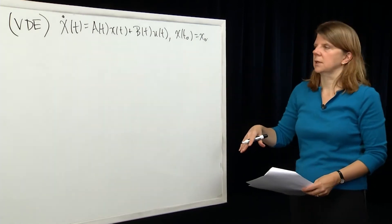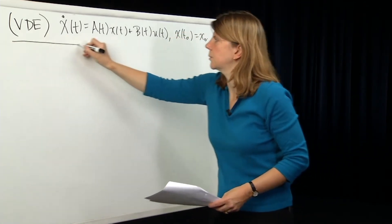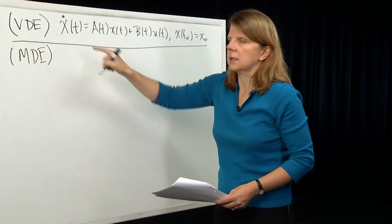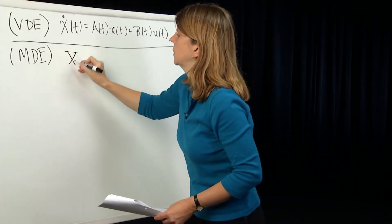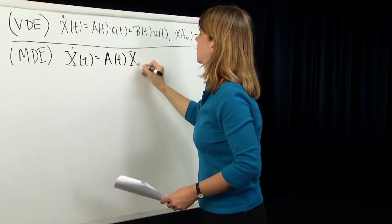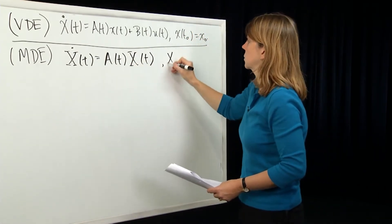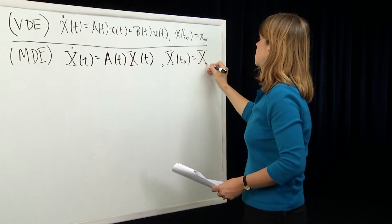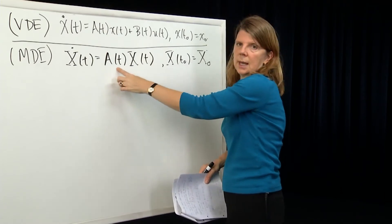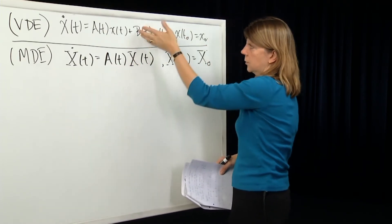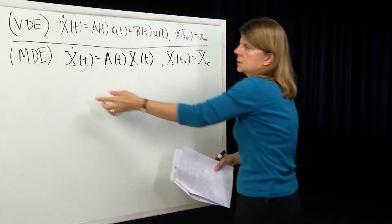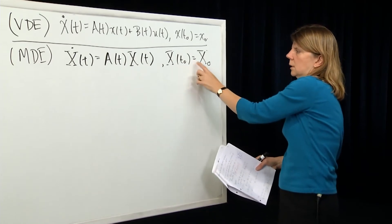We're going to step back from the vector differential equation and think about the following matrix differential equation — we'll call that the MDE. Instead of x being a vector in Rⁿ, I'm going to use the notation capital X(t), and construct the equation X-dot equals A(t)X, with initial condition X(t₀) equal to matrix X₀. Here A(t) is the same n-by-n matrix, and X is now an n-by-n dimensional matrix. This is called the corresponding matrix differential equation.